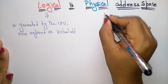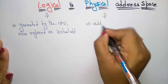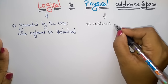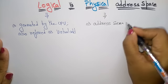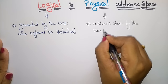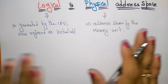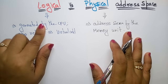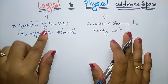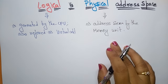Coming to the physical address space: the physical address space is the address seen by the memory unit. This is the main difference between logical address and physical address. The logical address is just an illusion — it is also called a virtual address and is generated by the CPU — whereas a physical address is the address seen by the memory unit.